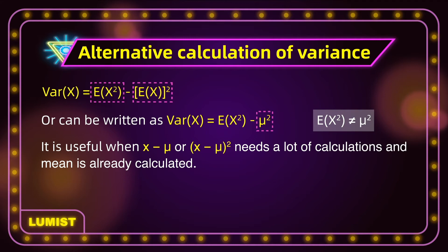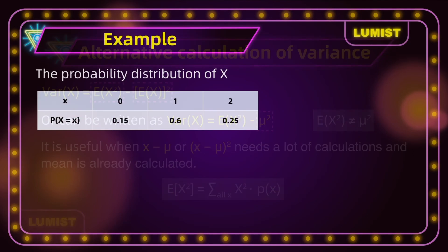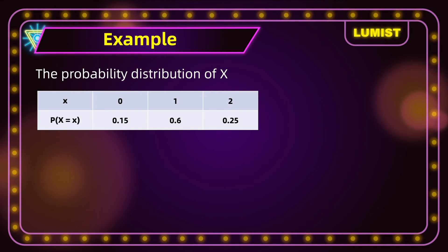Remember how to find E[x²]? Just use the formula: E[x²] is the sum of x² for all possible x values that the distribution can take, multiplied by corresponding probabilities. Let's look at the same example as before and find the variance using this new method. The variance of x equals E[x²] minus (E[x])².